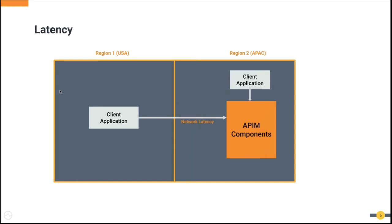Let's talk about the challenge of latency. As mentioned, regions reside in separate geographical locations. Generally, a region might represent a state, country, or continent. For global applications and systems, it will mostly be a continent or world region. Assume in this diagram that region 1 represents USA and region 2 represents the APAC region. The API manager runtime instance is residing in the APAC region, but there are applications consuming APIs in the gateway within both the USA and APAC regions. Client applications in the USA region will face considerable network latency since traffic needs to propagate through a distant geographical area.